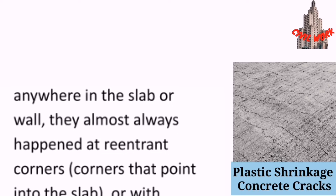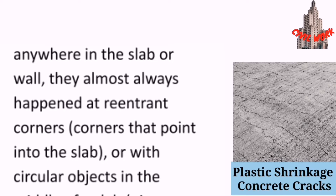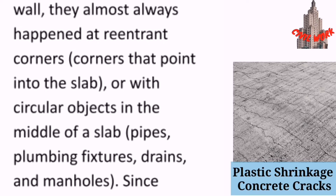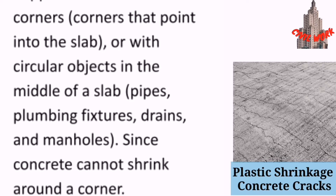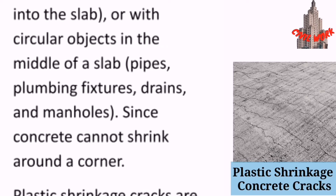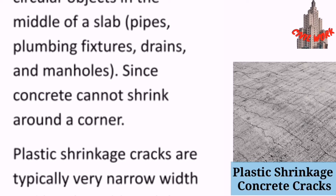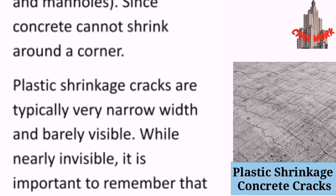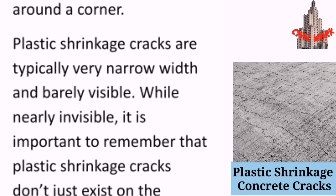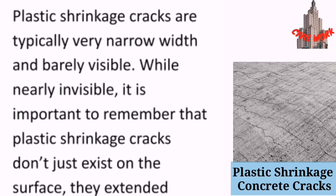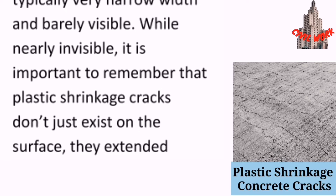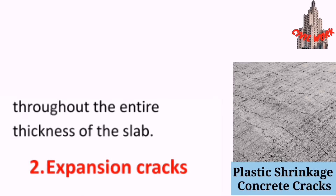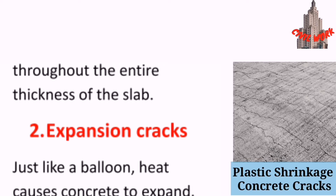While plastic shrinkage cracks can happen anywhere in the slab or wall, they almost always happen at restrained corners — corners that point into the slab — or with circular objects in the middle of a slab, such as pipes, plumbing fixtures, drains, and manholes. Since concrete cannot shrink around a corner, plastic shrinkage cracks are typically very narrow and barely visible. Despite being nearly invisible, they extend throughout the entire thickness of the slab.